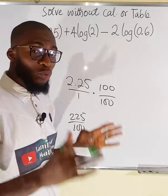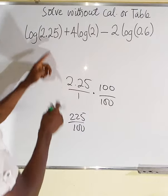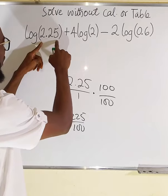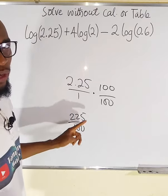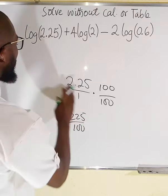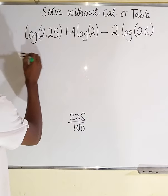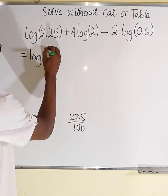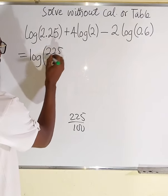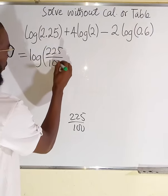This is only because I want to show you all the details. So instead of 2.25 I can now write it as 225 divided by 100. So we have log of 225 divided by 100.